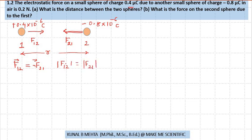First, we know the magnitude is 0.2 Newton, so the force on the second sphere due to the first is 0.2 Newton, which gives the answer to our part B.